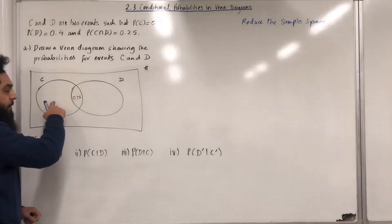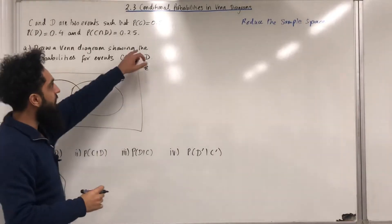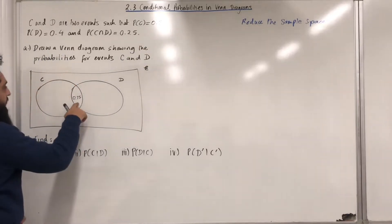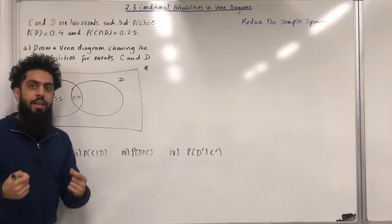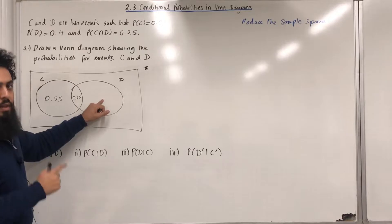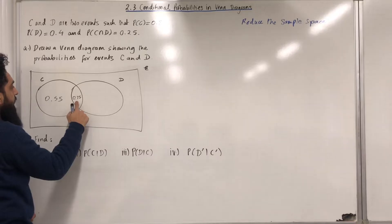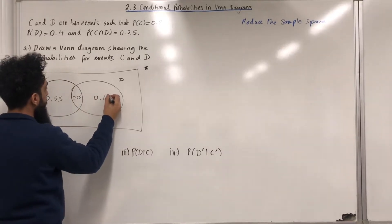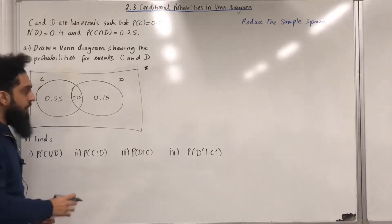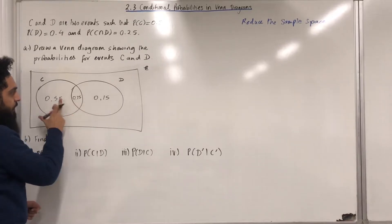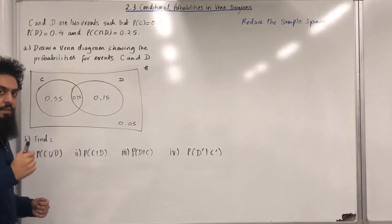This part represents probability C only. Probability C only is calculated by taking probability C, which is 0.8, and subtracting 0.25, giving us 0.55. Similarly, probability D only is calculated by taking probability D, which is 0.4, and subtracting 0.25, giving us 0.15. The outside probability is calculated by taking 1 minus the sum of these probabilities, which gives us 0.05. That completes the event diagram.